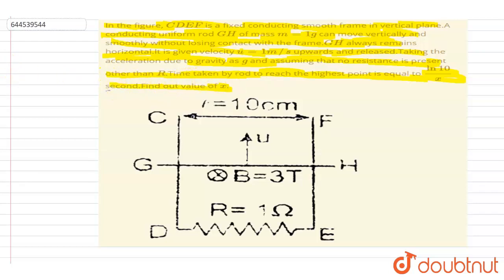So if you see here, mg will act in downward direction. And since it is moving in upward direction, the induced EMF will be in the direction of v cross B. So the current here will be in this direction, since induced EMF will be here like this.